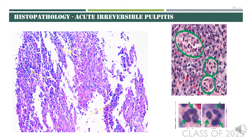In acute irreversible pulpitis — persistence of inflammatory changes for a longer duration, generally less than a week — the inflammation has extended throughout the entire pulp tissue. There will be extensive accumulation of inflammatory cells, predominantly neutrophils. Neutrophils can be identified by their polylobed nucleus, easily identified at high power under the microscope. There will be extensive neutrophil accumulation within the pulpal tissue along with edema and spacing within the pulpal tissue as well.